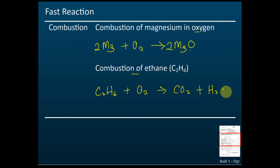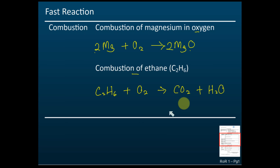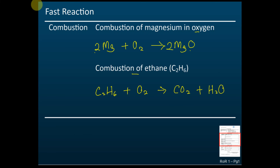You're going to learn about ethane in chapter 2 — this is chapter 1. Now let's balance this equation. We have two carbon dioxide molecules because we have two carbons in ethane, so we need 2CO₂.